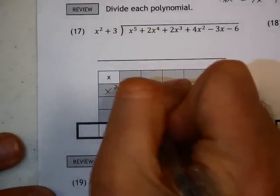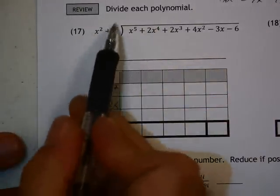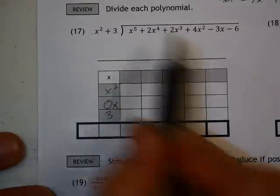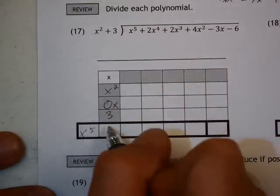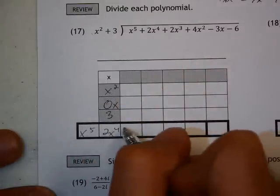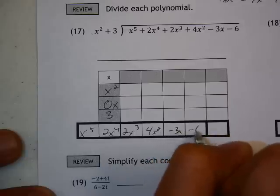x squared will start here, 0x goes here, 3 goes here. So I'm putting this on the left just like normal. This, all this stuff, x to the 5th, 2x to the 4th, 2x to the 3rd, 4x squared minus 3x minus 6 goes here.